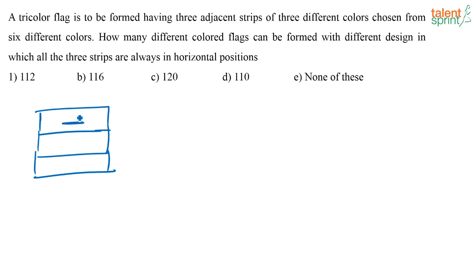See, the first position can be filled in six ways, right? Any six of the colors can be used in the first position. In the next position, one color already I have used. Remaining five colors are there. Any one of the five colors I can use for the second position.